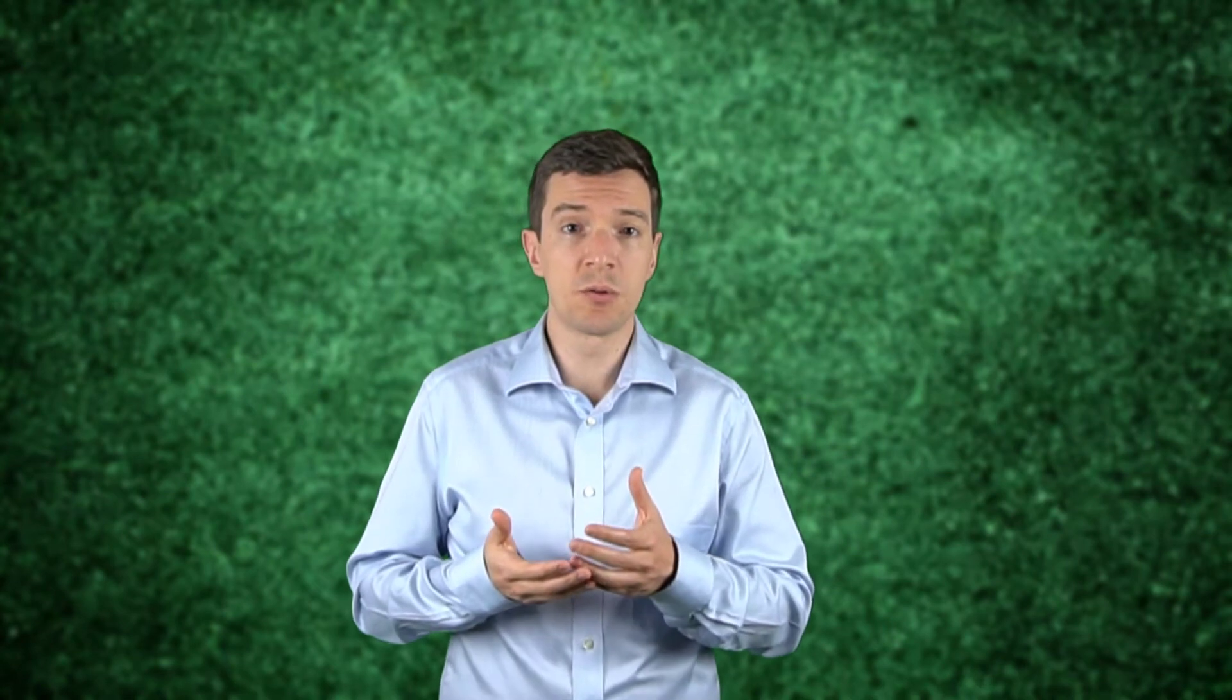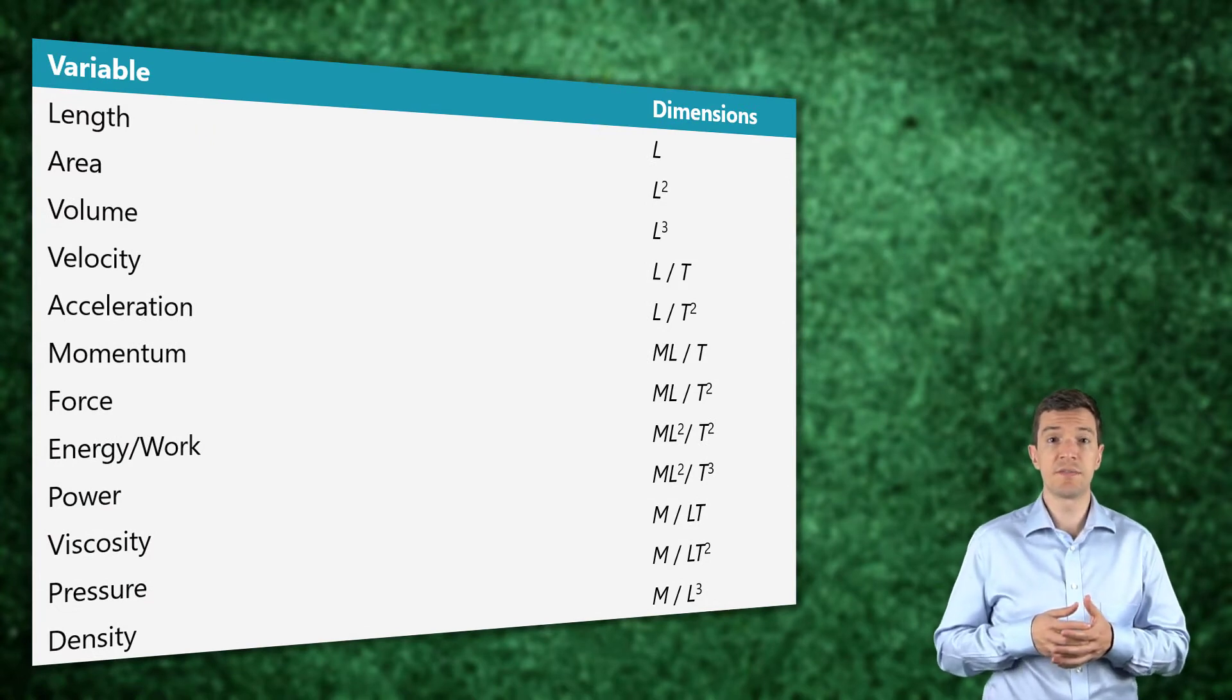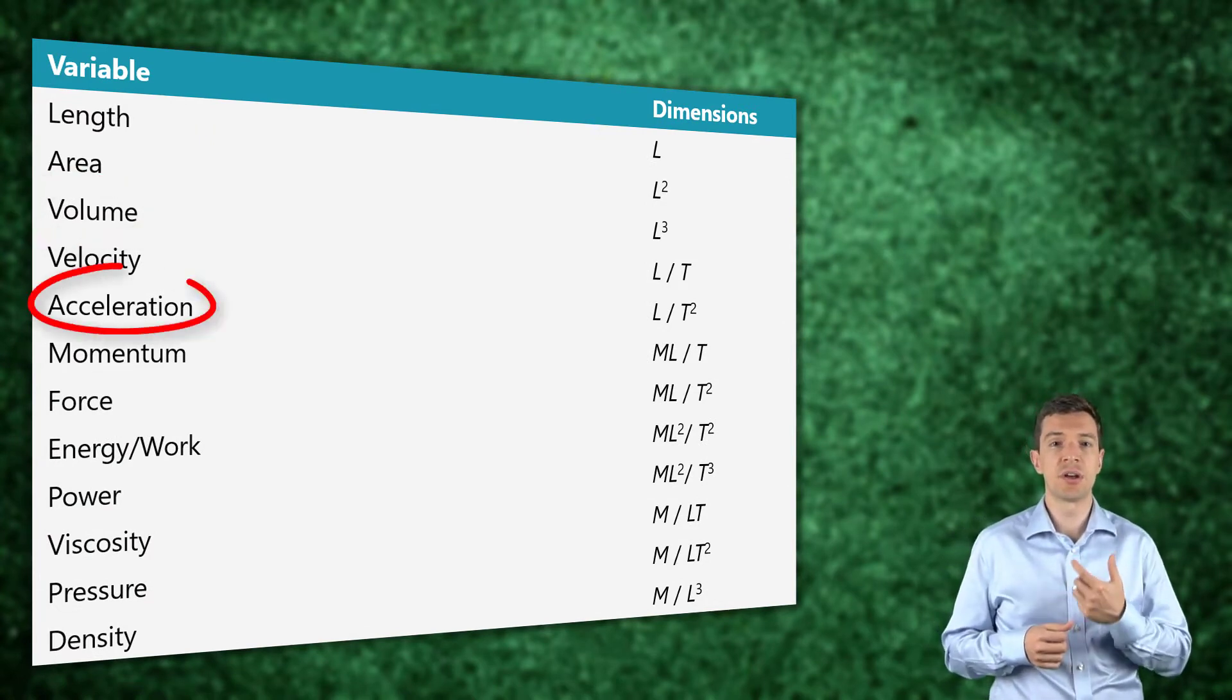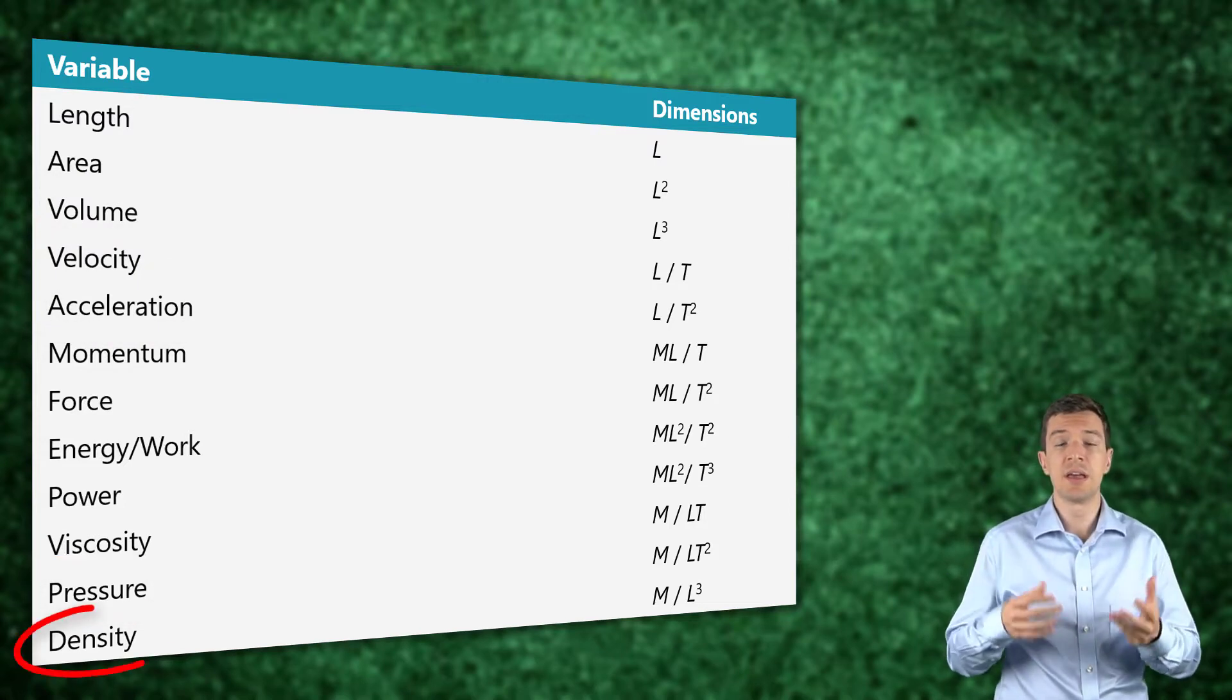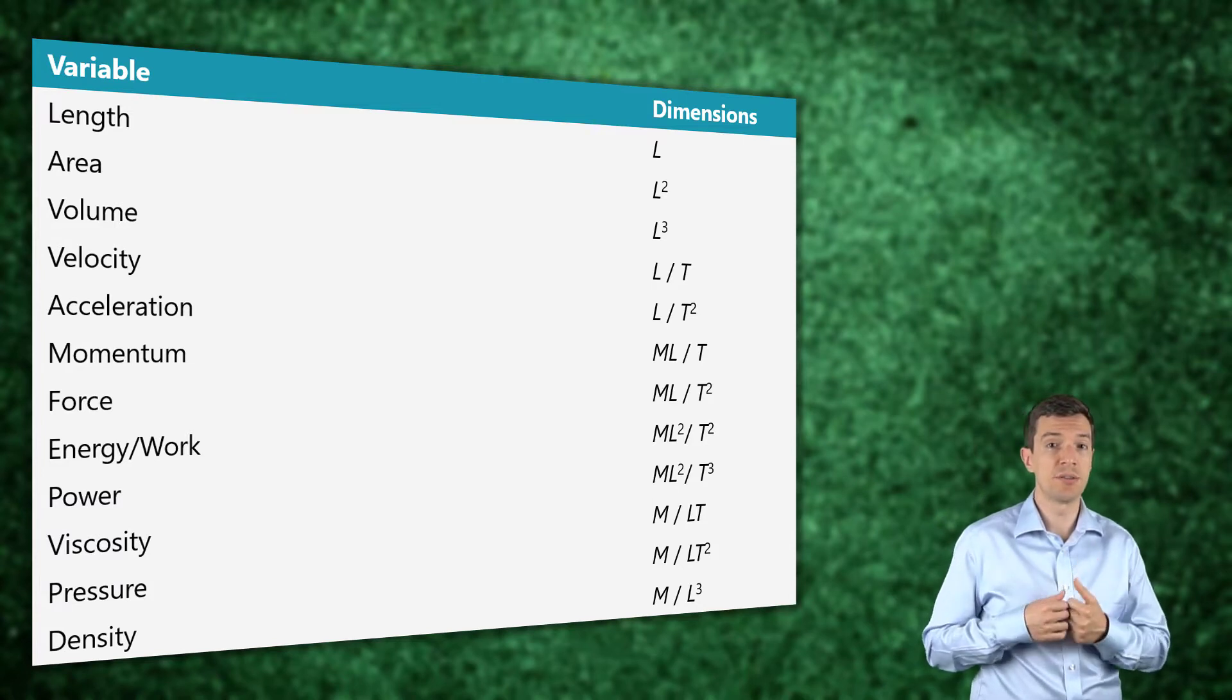Every physical variable can be described through fundamental quantities. For example, in this table we can see that the different variables, such as volume, acceleration, pressure and density, can be described by just three different fundamental quantities.